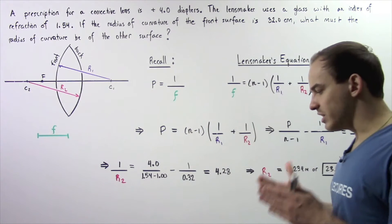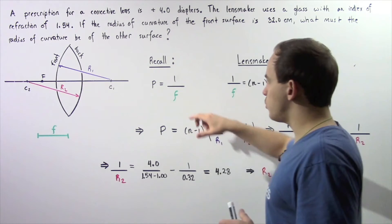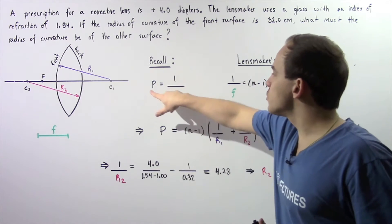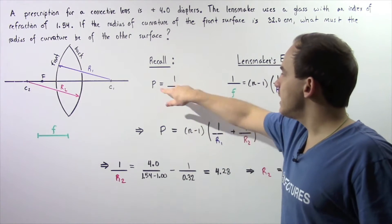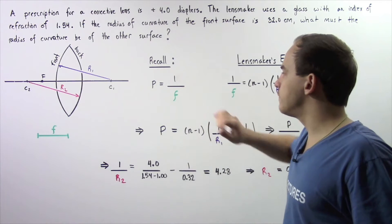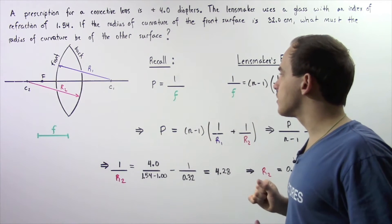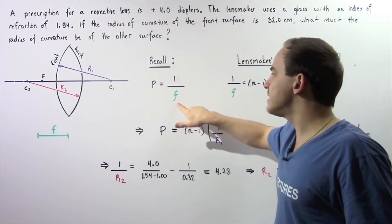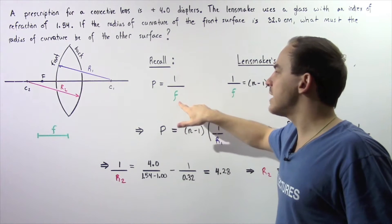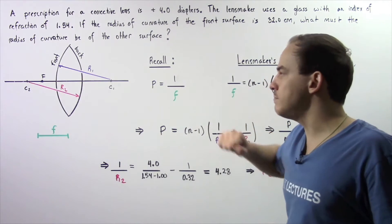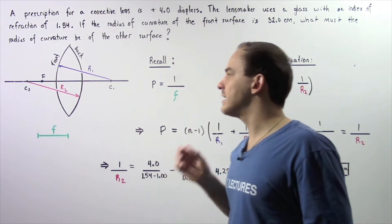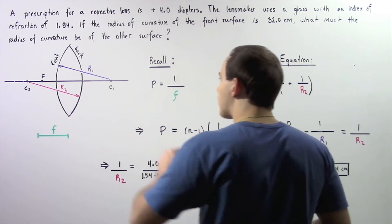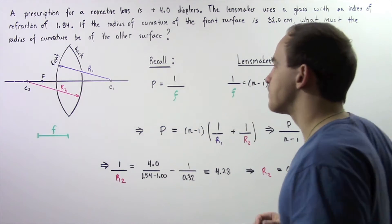Let's begin by recalling the relationship between the focal length and the power of our lens. The power is equal to 1 divided by the focal length. Because the power is positive, that implies that the focal length is also positive, and that means we're dealing with a convex lens — specifically, a double convex lens.